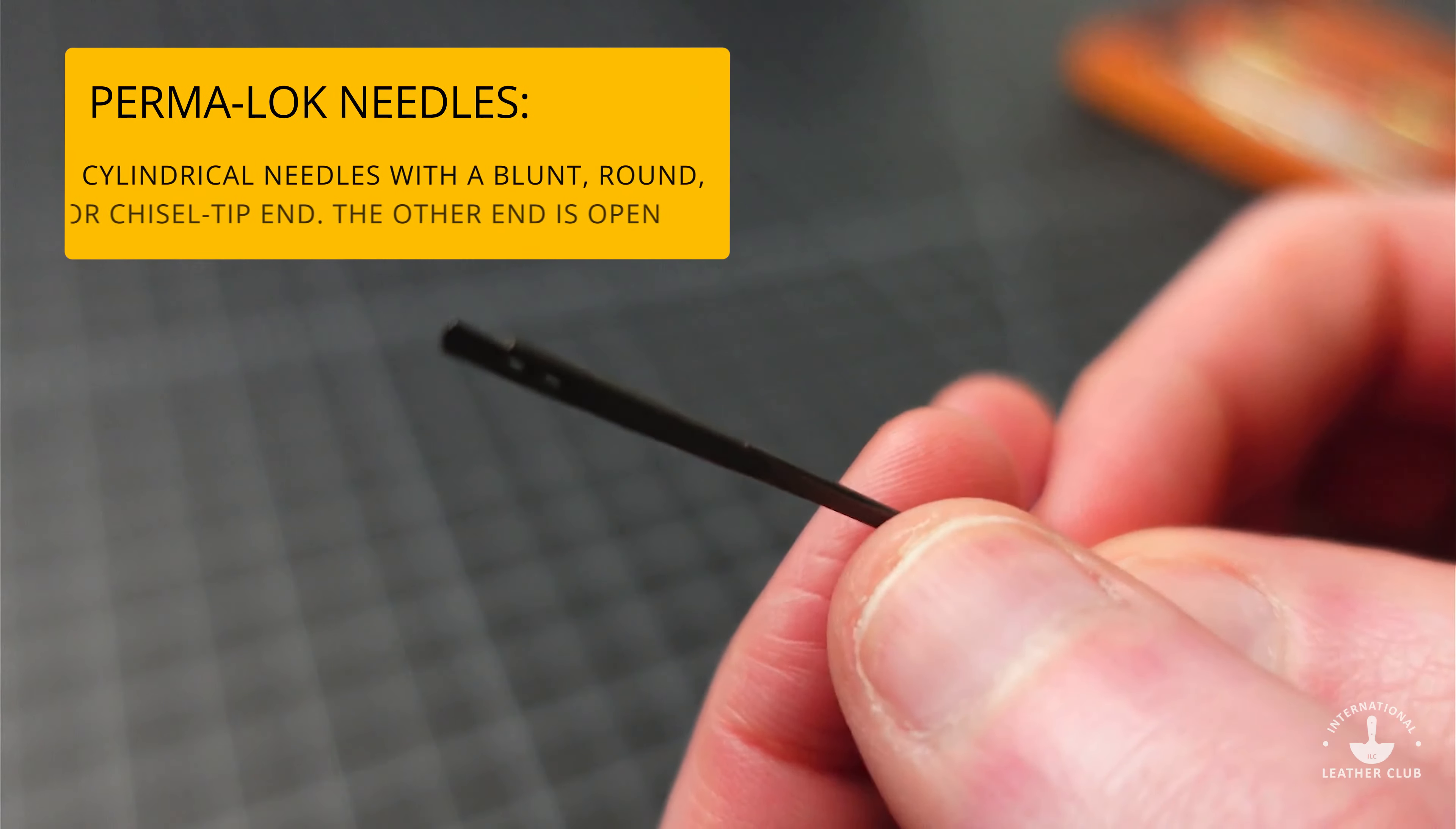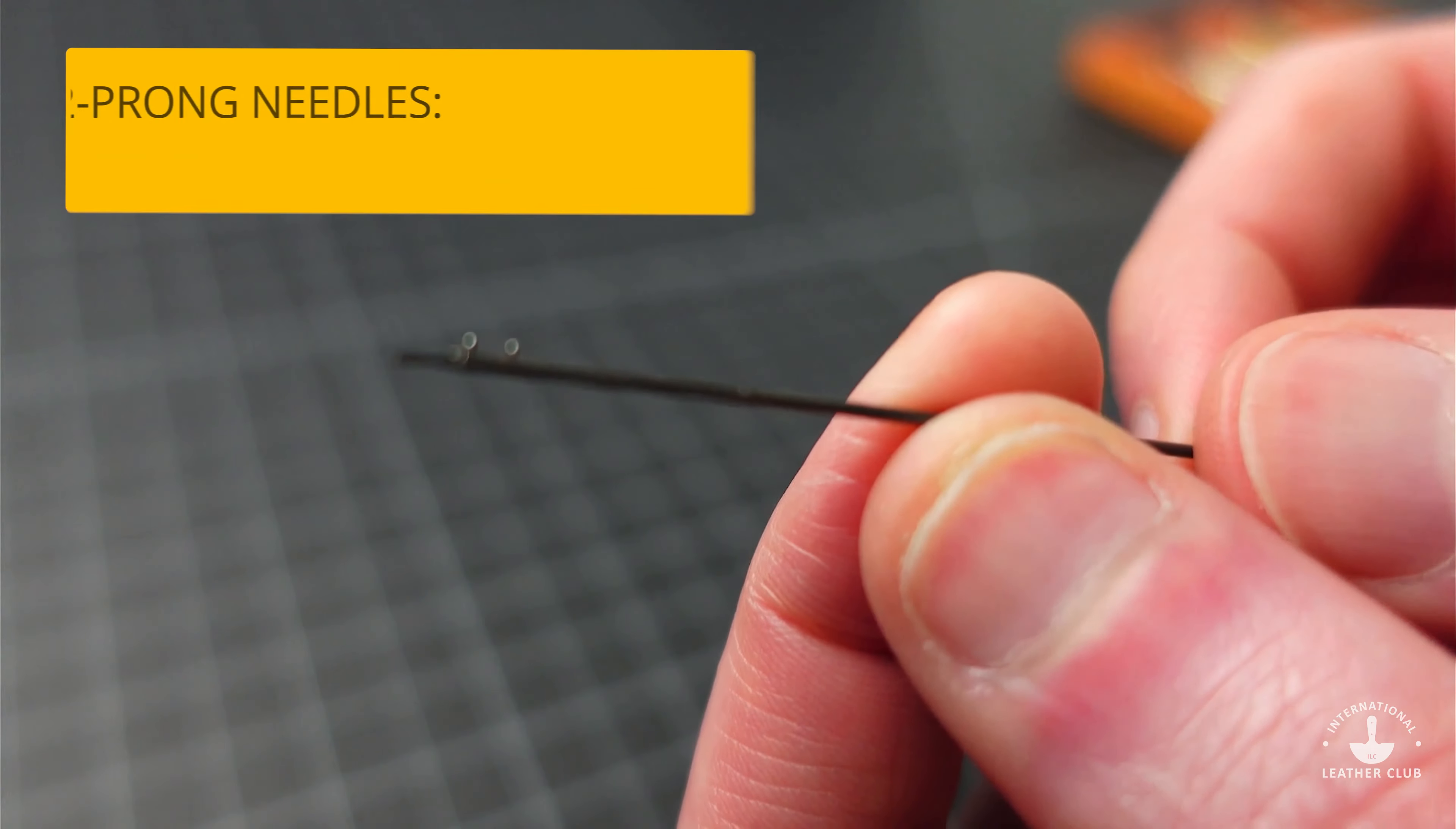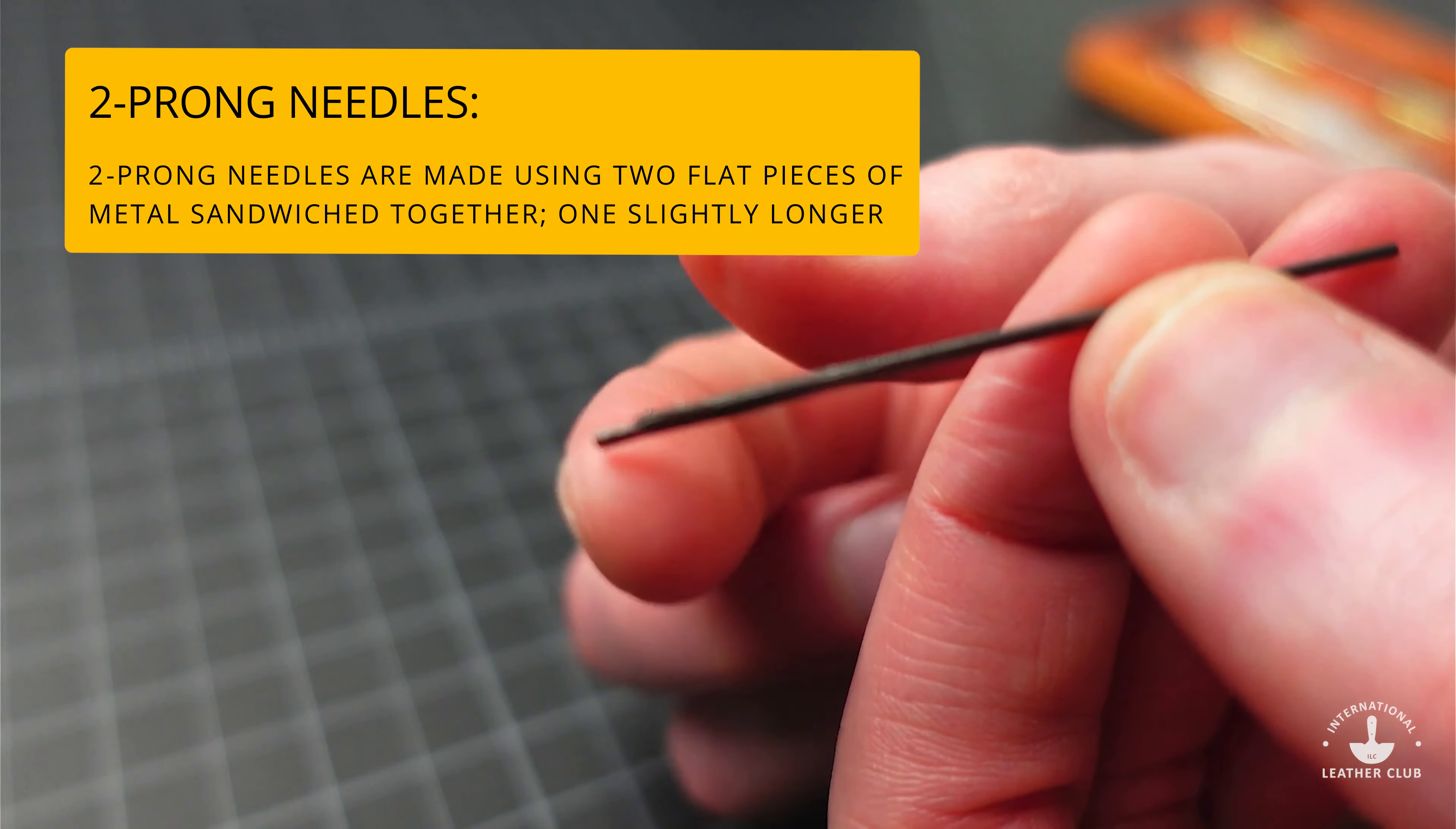And there are a few different types. One is going to have a little spring clasp here where you can feed the lace through. It'll spring hold it shut. Another variety has these two prongs here and that is going to catch onto that leather material and then help pull it through as the stitches are being made.